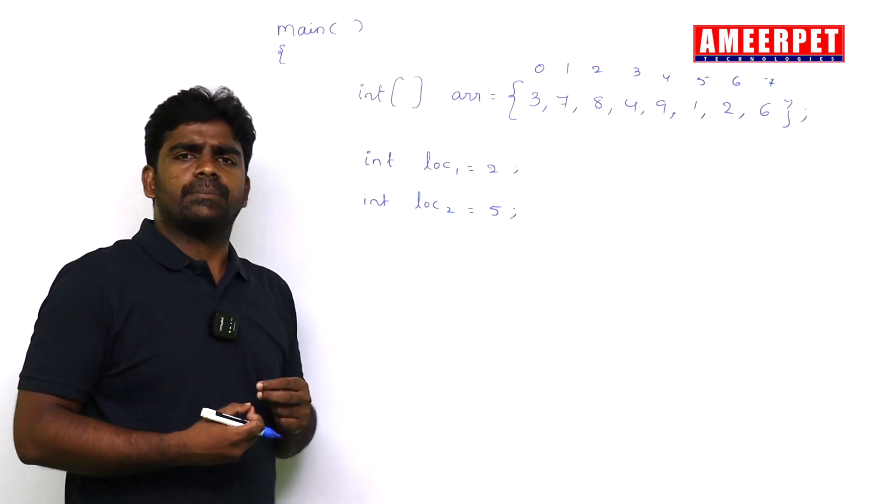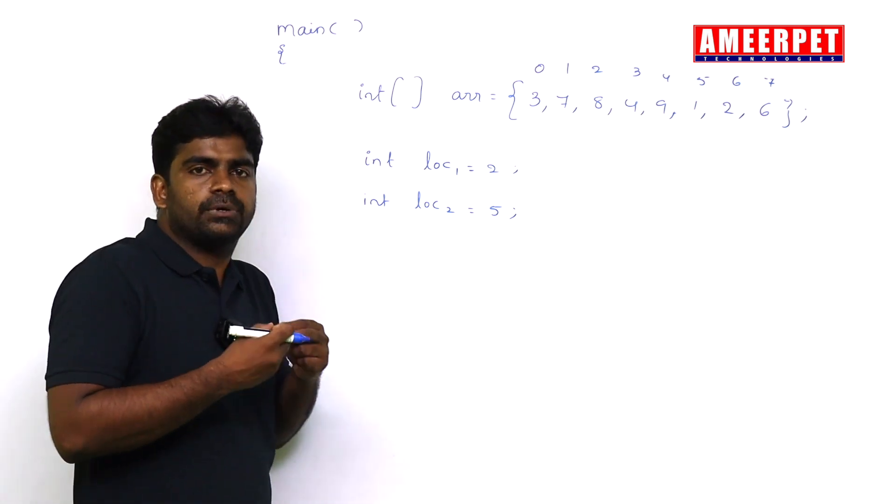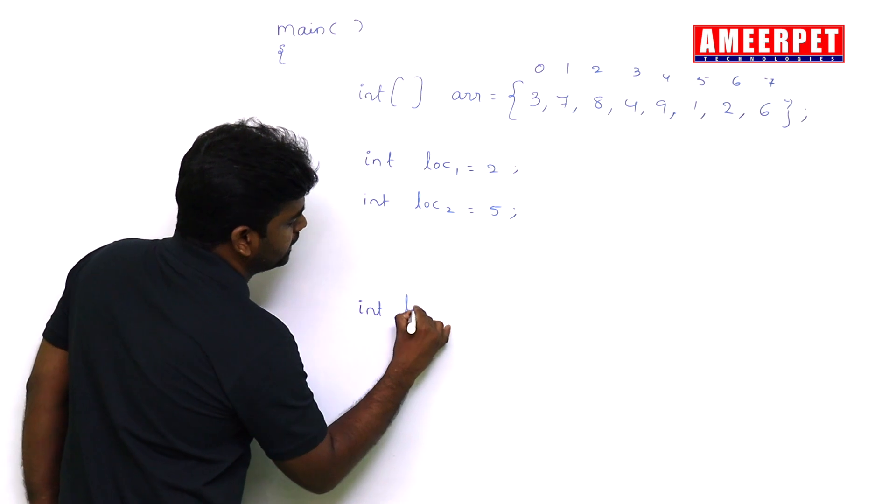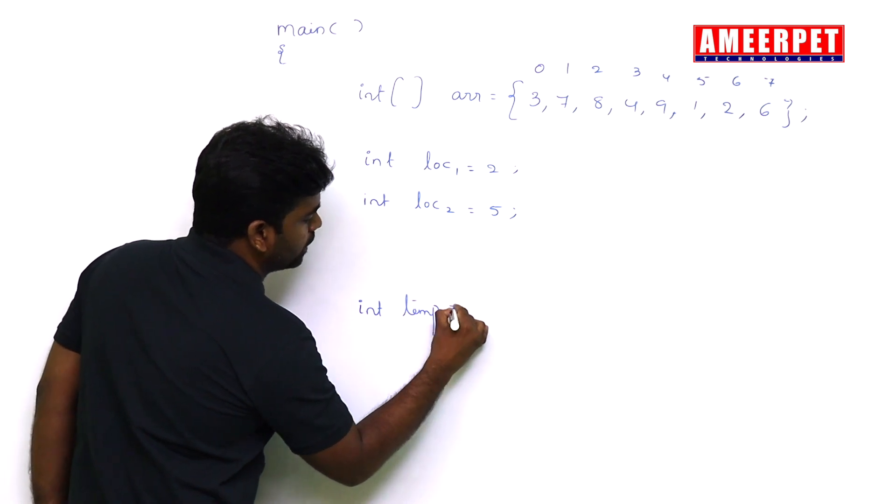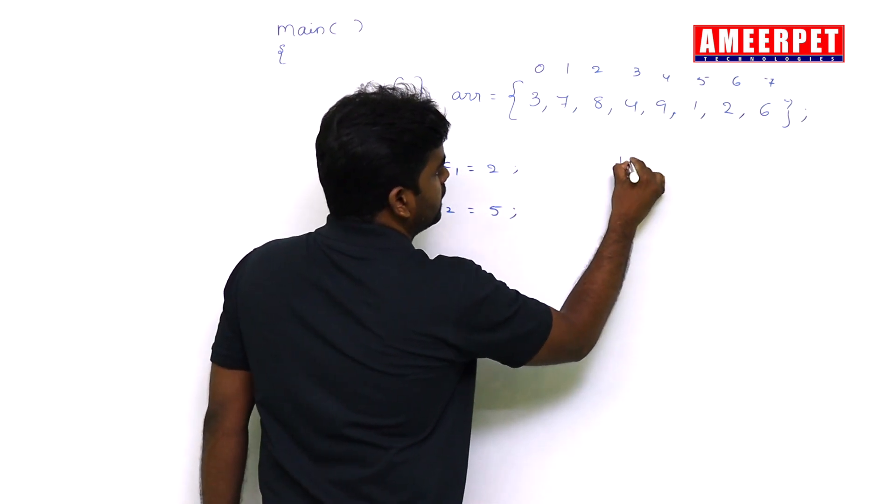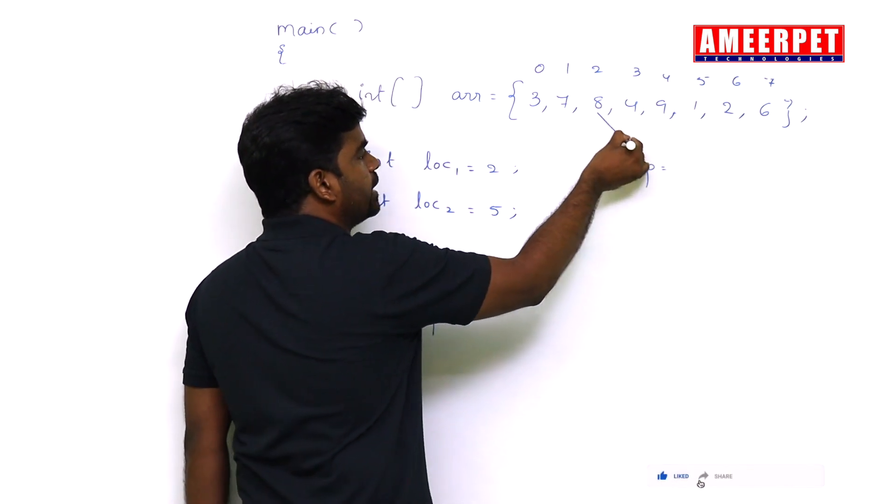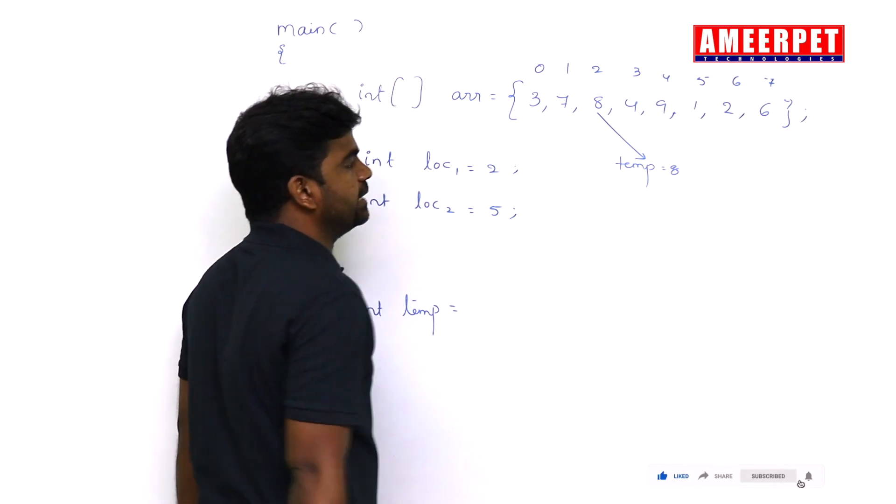So how to swap is normal swapping only, just using one temporary variable. I am taking one temp variable, integer temp equal to, first take one temp variable and store the second location element into temp, that is 8.